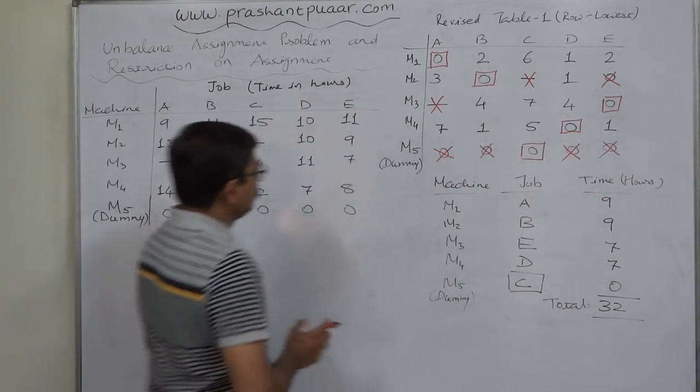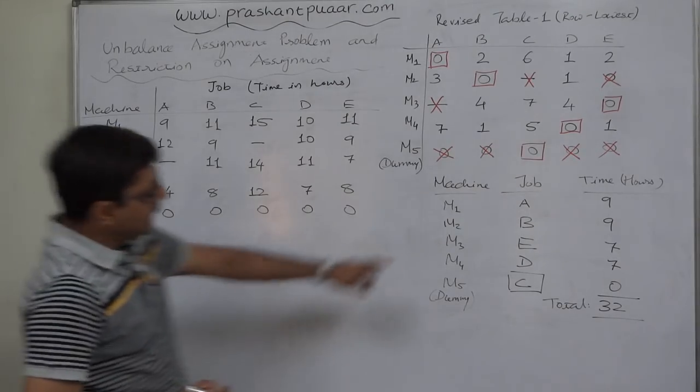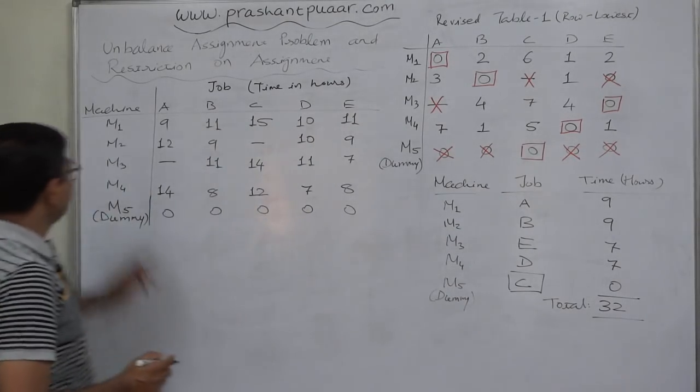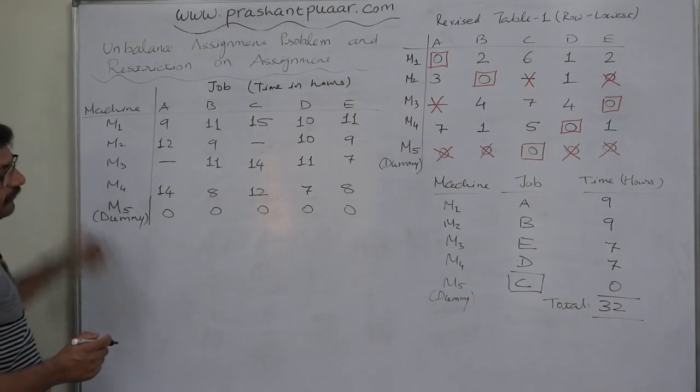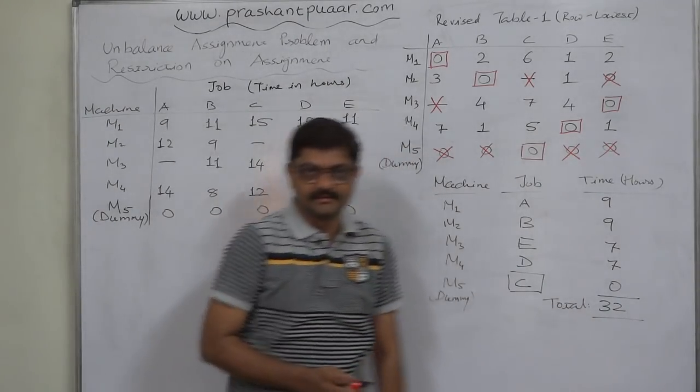Out of 5 jobs A, B, C, D, E we can assign only A, B, D, E to our real machines M1, M2, M3, M4 and these 4 jobs can be done in 32 hours. Thank you.